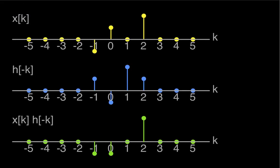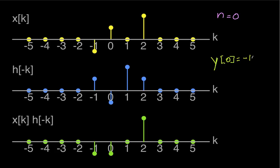For n equal to 0, we have x of k and h of minus k — not shifted at all. The products are: minus 1 times 1 giving minus 1, then 1 times minus 1 giving minus 1, then 0 times 2 giving 0, then 2 times 1 giving 2, and everything else is 0. So y of 0 is negative 1 minus 1 plus 2, which equals 0.